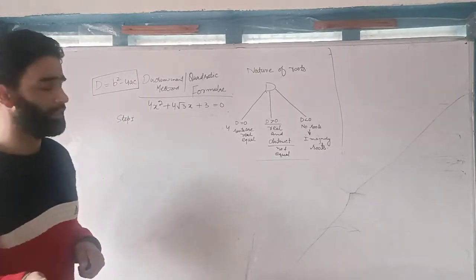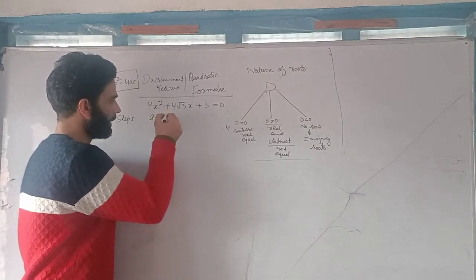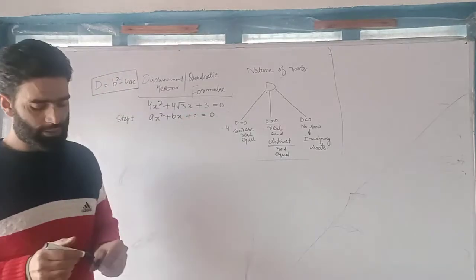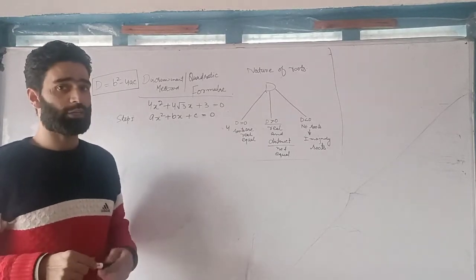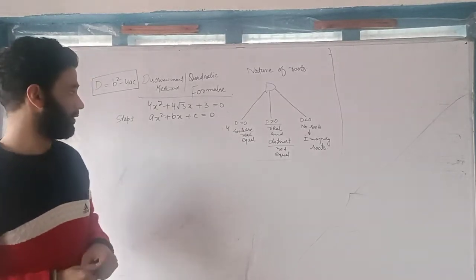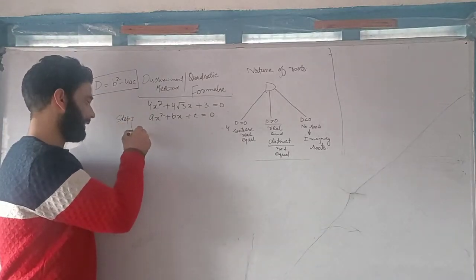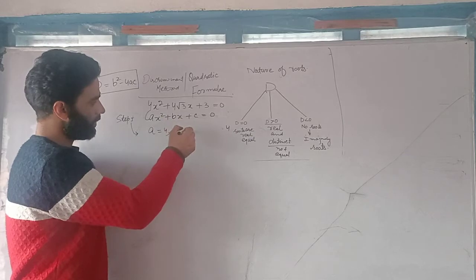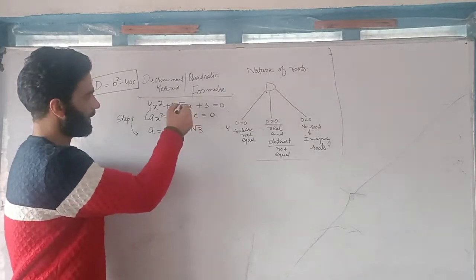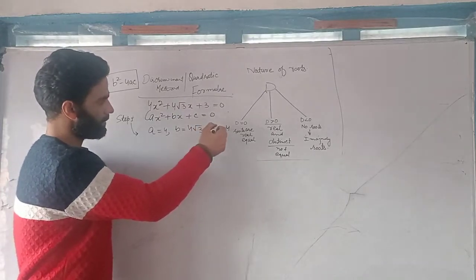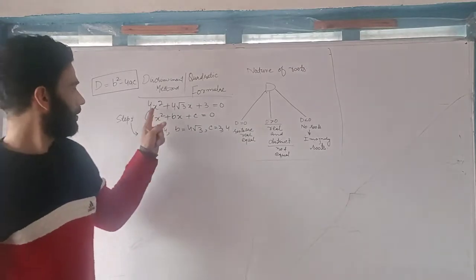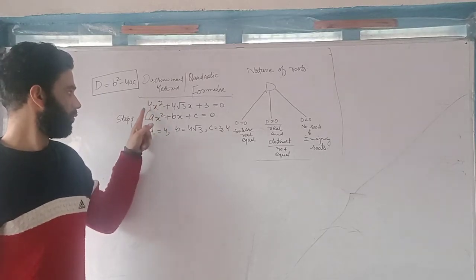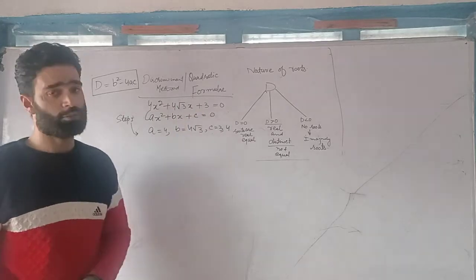The general form of the quadratic equation is ax square plus bx plus c is equal to zero. Here, a is the coefficient of x square, b is the coefficient of x, and c is the constant term. For our equation, a is equal to 4, b is equal to 4 under root 3, and c is equal to 3. The numerical coefficient of x square is 4, the numerical coefficient of x is 4 under root 3, and the constant term is 3.